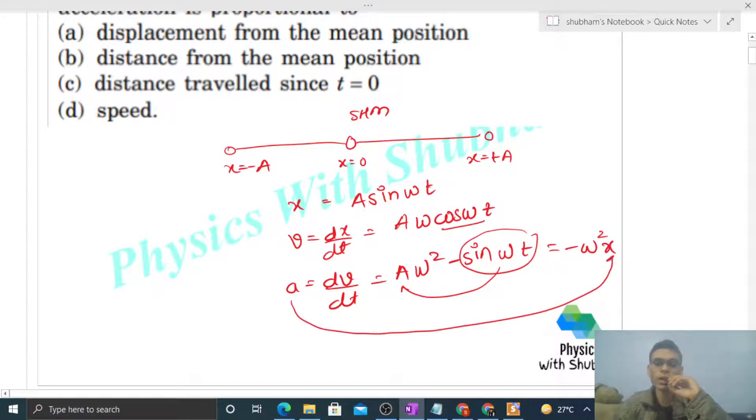And x coordinate of the particle will be displacement of the particle from the mean position. See, when the particle is at some x coordinate, that x coordinate is nothing but the displacement of the particle from the mean position.